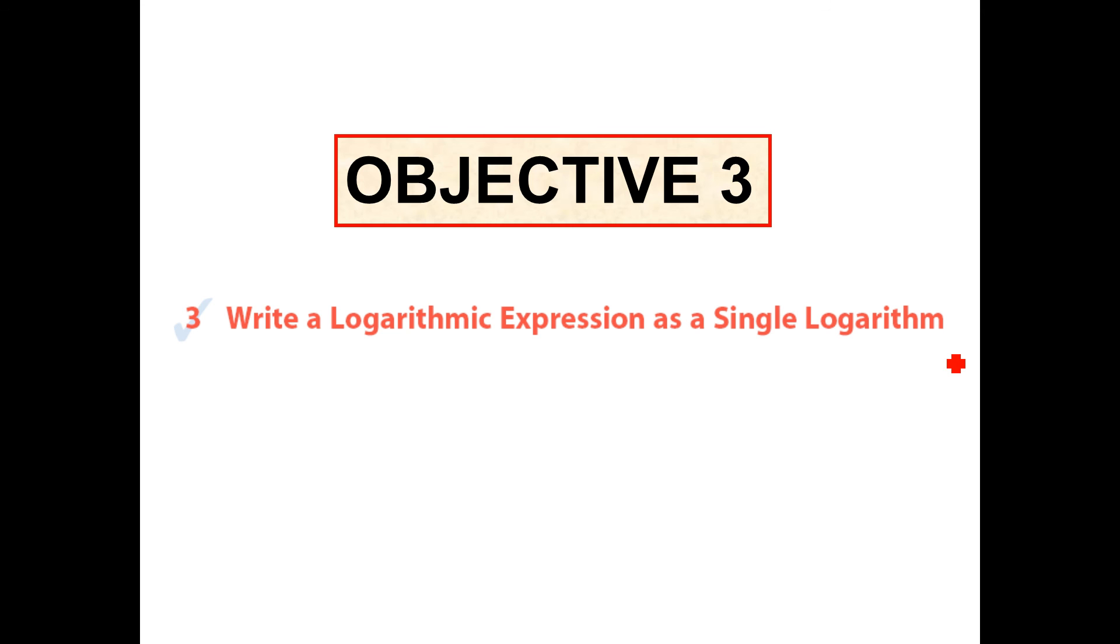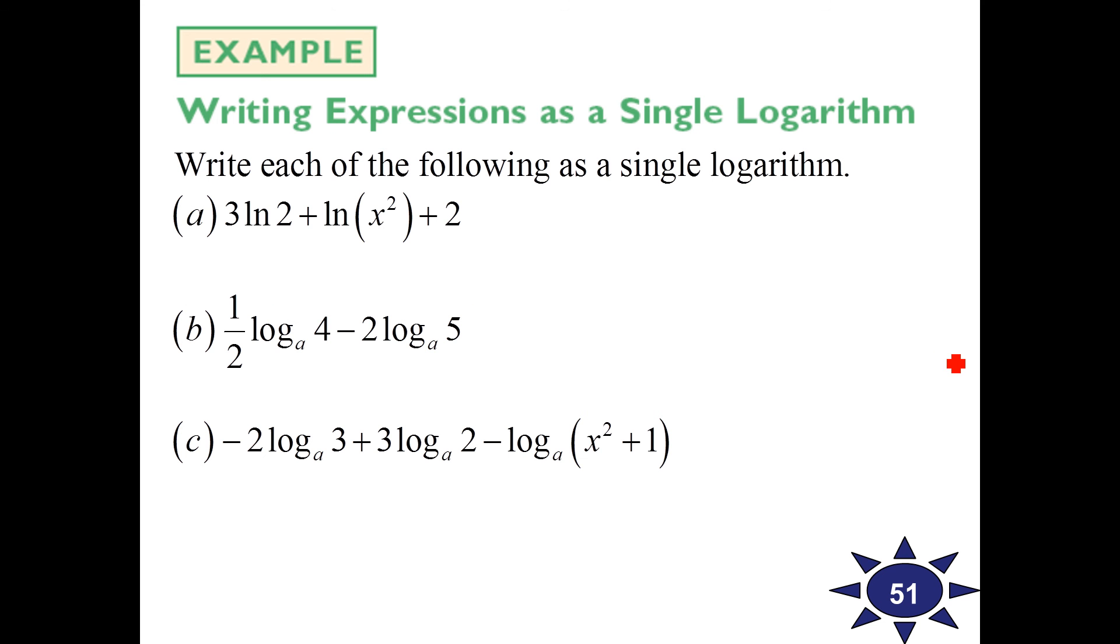Objective 3. Now let's go the other direction. Let's take the split up multiple logs and put them all together. I've got log and log so I can put those two together. Before I do that, I'm going to bring these up here. So I'm going to rewrite this as natural log of 2 cubed plus natural log of x squared plus 2. Now these two I can put together. This 2 does not have a natural log with it. So I got to leave it alone. So this is natural log of 8. 2 cubed is 8 times x squared and then plus 2 on the end.